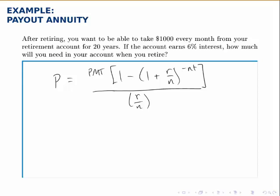Here's the formula for a payout annuity. It's similar to the savings annuity formula, but it's turned around. Here R, N, and T are just what you expect. P is the lump sum that the account holds at the beginning of this process.